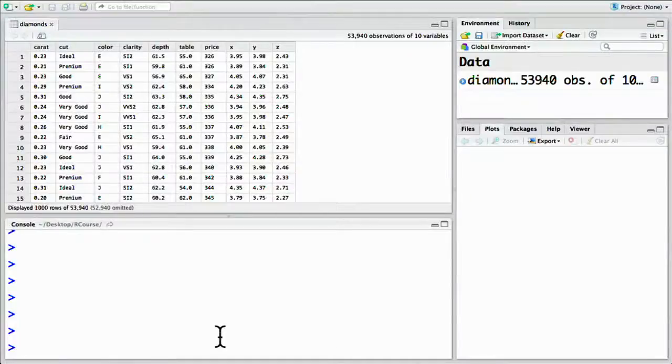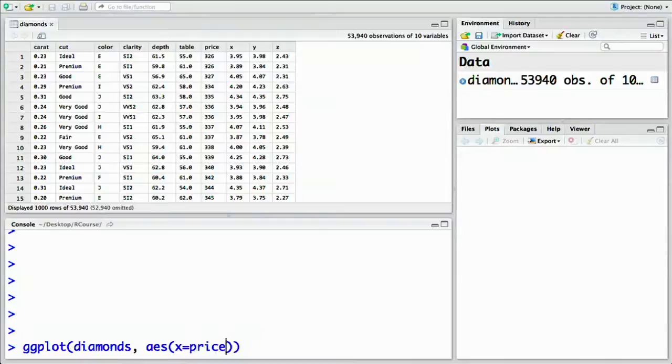All you need to do to make a histogram is change your layer from geom_point to geom_histogram. For example, we do ggplot of diamonds, our data, and aesthetic x, what we want to put on the x-axis. In this case, let's look at the distribution of price. Then we add the geom_histogram layer.